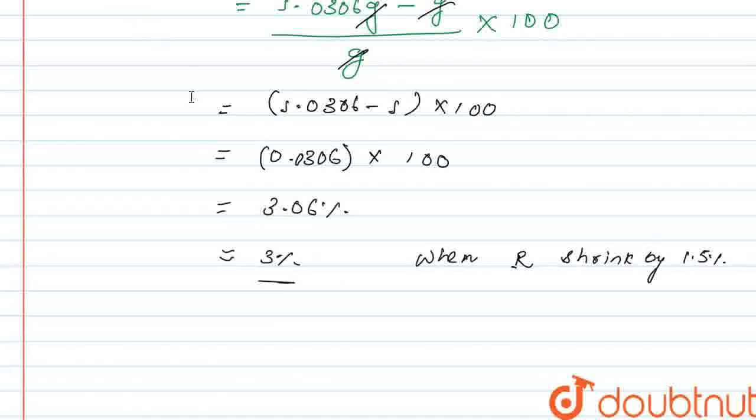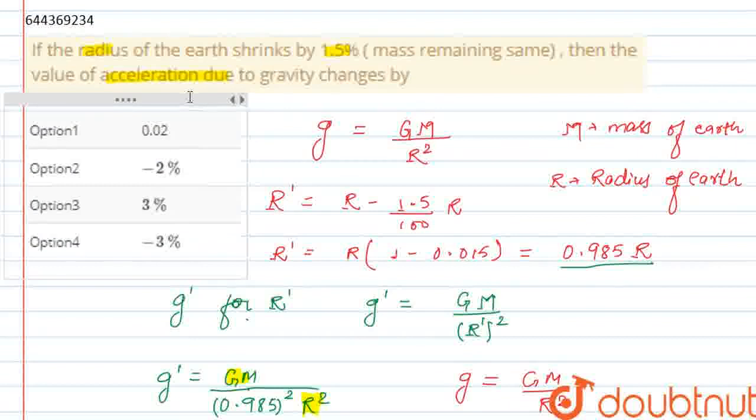So the change in acceleration due to gravity when R shrinks by 1.5% will be 3%, the acceleration due to gravity. Let's see which option it matches. So option 3, 3%. Hope you guys understand. Thank you.